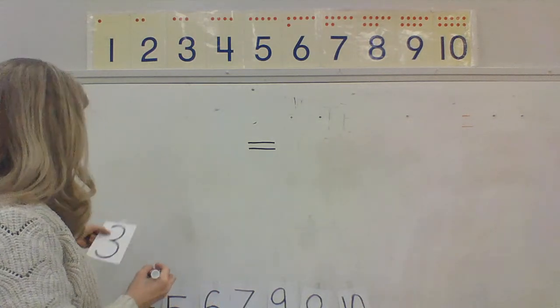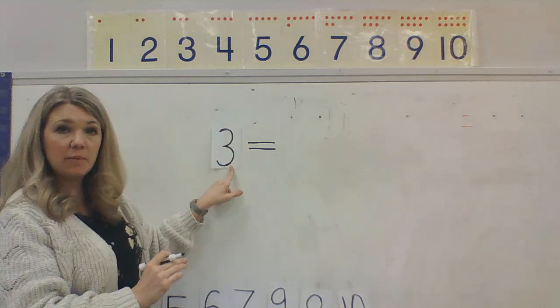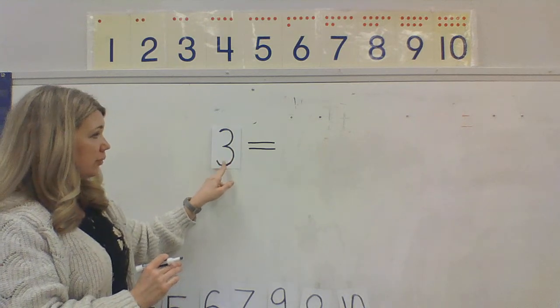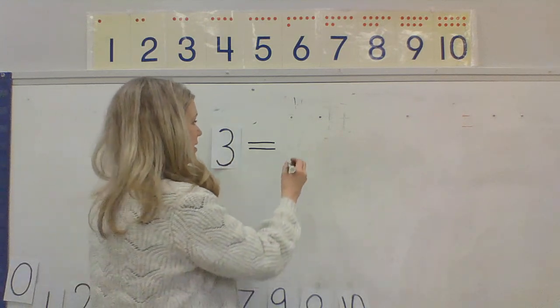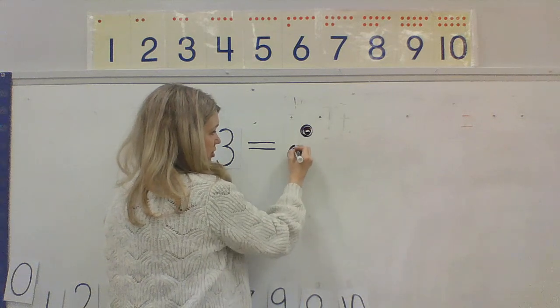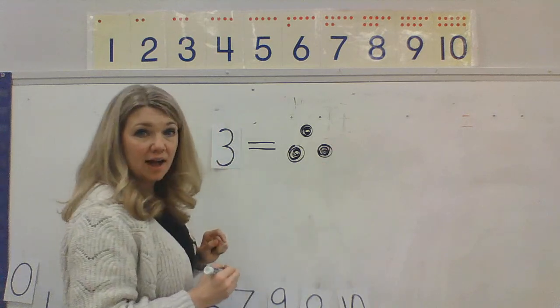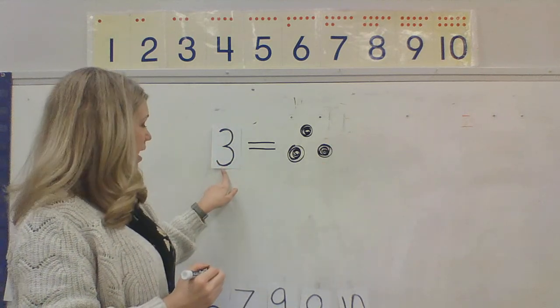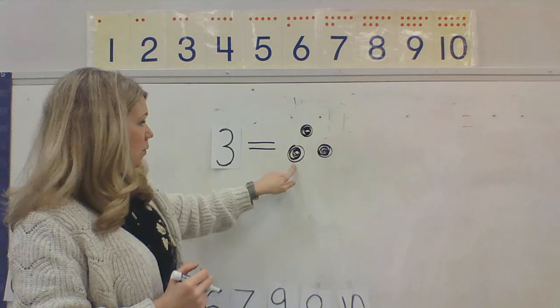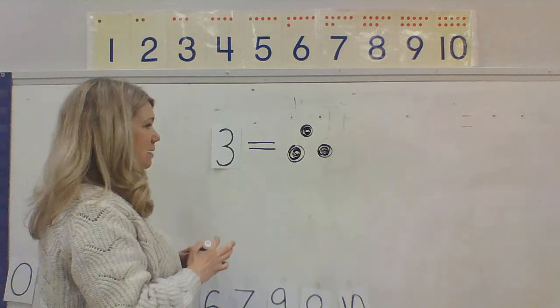This sign means that it is equal or the same as. So, if I have the number 3, I could say the number 3 equals or the number 3 is the same as 1, 2, 3 dots. The number 3 is equal to or the same as 1, 2, 3 dots. Yeah, that means the same.